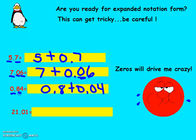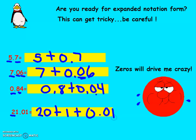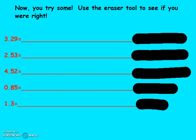Making sure I put a zero in the tenths place. Try the last one on your own — pause the video. You should have gotten: twenty plus one — there are no tenths — then one hundredth. Those zeros can really drive you crazy!